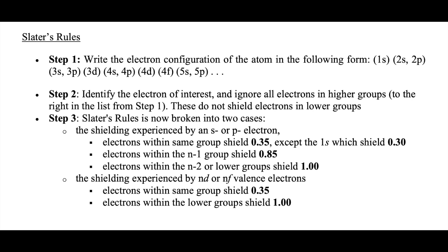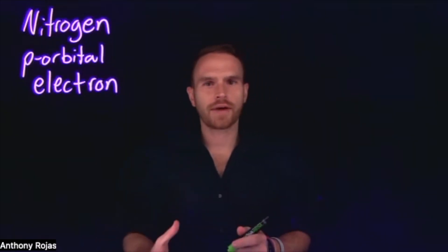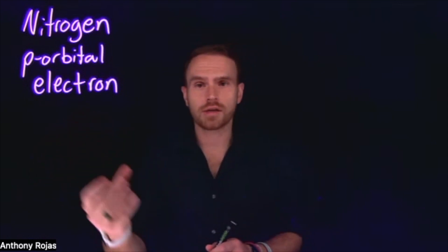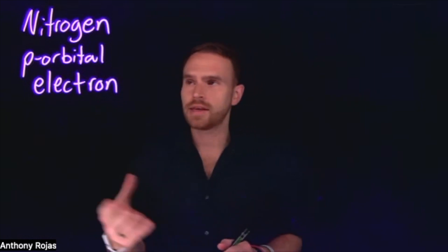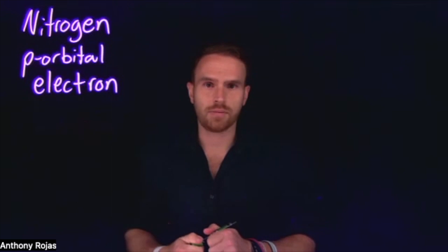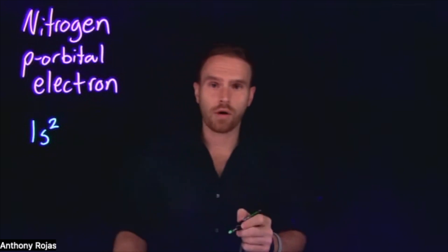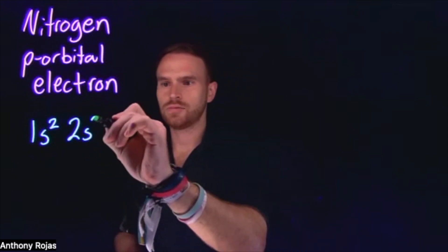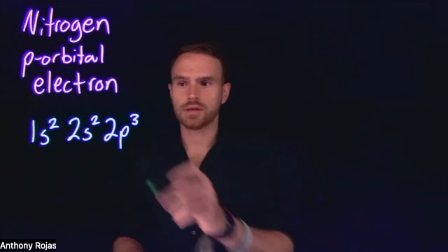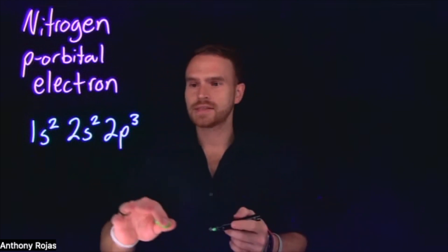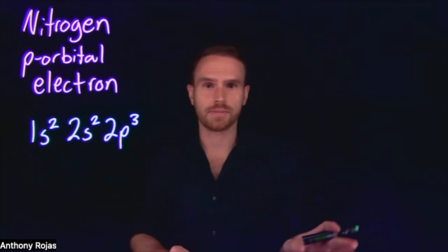Now that you've had a second to look over those rules, let's try an example. We'll look at nitrogen and the effective nuclear charge felt between the protons in the nucleus and one of the p-orbital electrons. Nitrogen is the seventh element on the periodic table, on the second row, and it has a complete electron configuration of 1s², 2s², 2p³. There are five valence electrons, and this matches that for nitrogen. You need to be able to write the complete electron configuration of atoms and elements in order to do this.